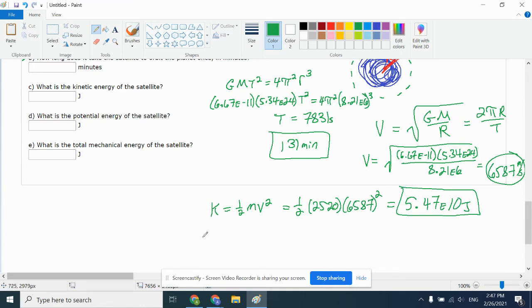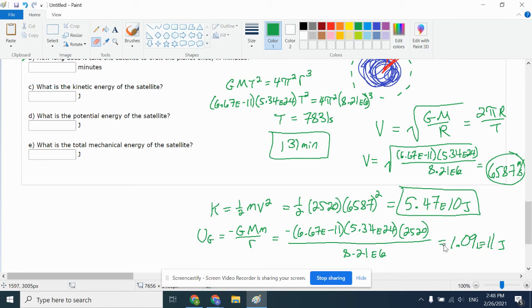Your potential energy is negative GMM over R. That'll be a negative 6.67E-11, mass of the planet was 5.34E24, mass of the satellite 2520, orbital radius 8.21E6. Going back to the calculator, again rather annoying with such very big numbers but manageable nonetheless. I got negative 1.09E11 joules.